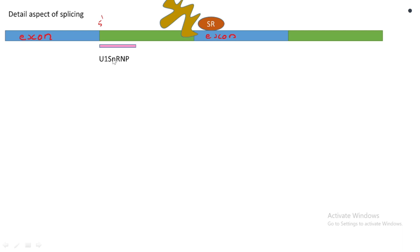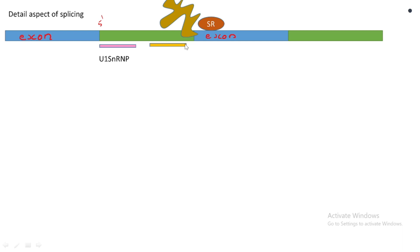So this protein comes and binds the intron towards the 3' end — it interacts with the pyrimidine-rich area and also with the SR protein associated with the exon splicing enhancer sequence of the exon. Two important factors: U1-snRNP and U2-AF both come and bind. The role of U2-AF is that it is responsible for recruiting another snRNP called U2-snRNP. U2-snRNP then comes and binds towards the 3' end, at the branching point — the point for lariat formation.